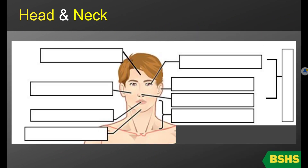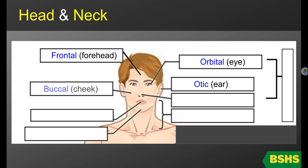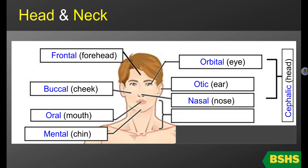Let's talk about the regions of the head and neck first. Frontal is the forehead. Orbital is the eye. Otic is the ear. Buccal is the cheek. Nasal is the nose. Oral is the mouth. Mental is the chin. The entire head is called the cephalic region. And cervical refers to the neck.